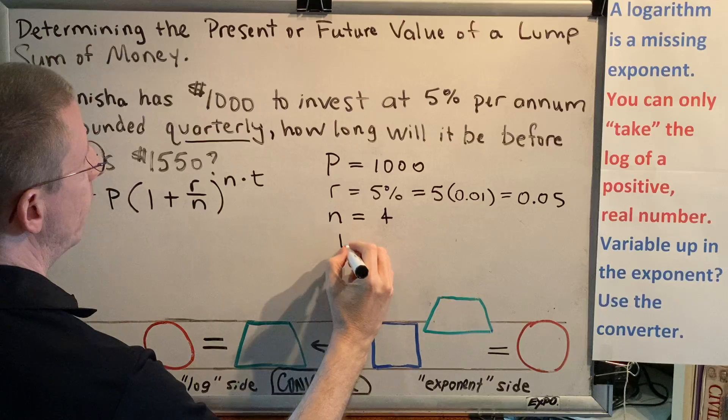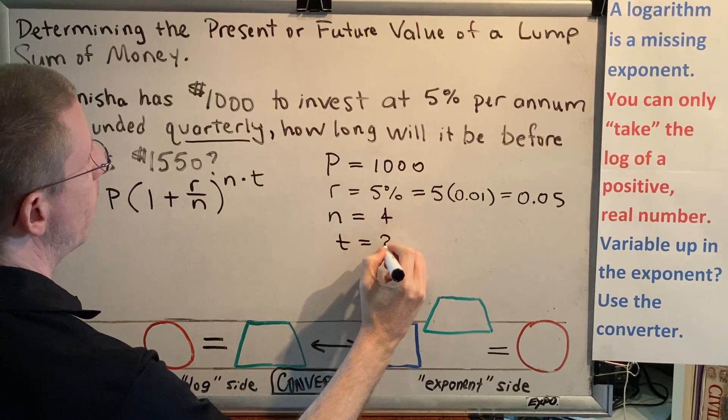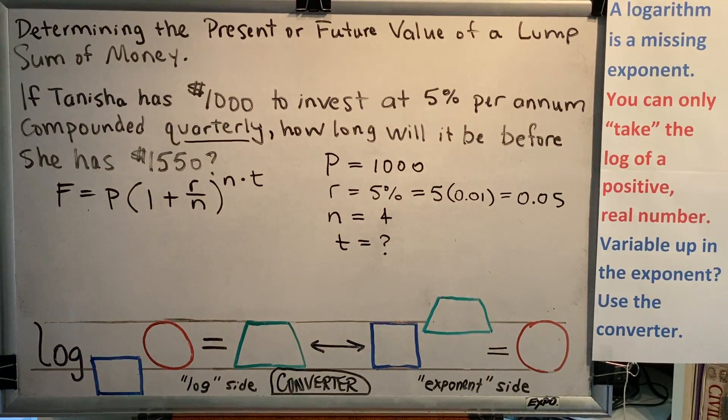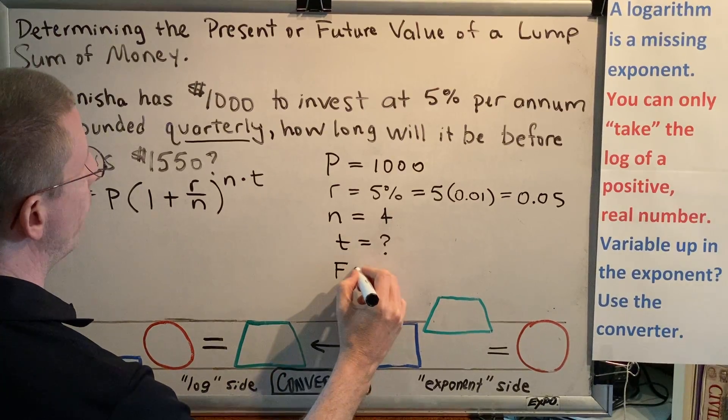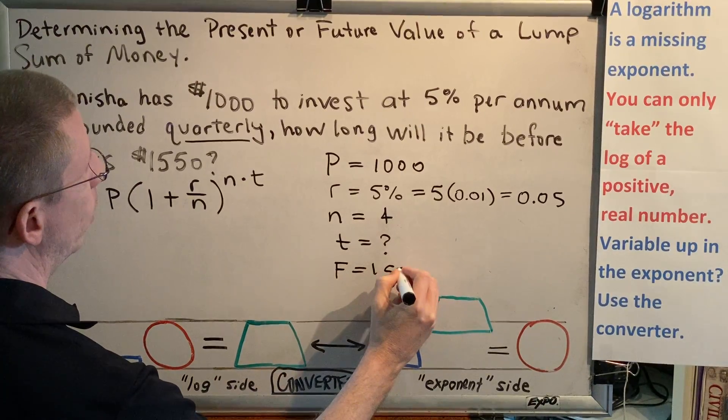How long will it be? That tells me that T, the time, is the unknown in this problem. And then finishing the sentence, before she has $1,550. That's F, the amount of money that she will have in the future.